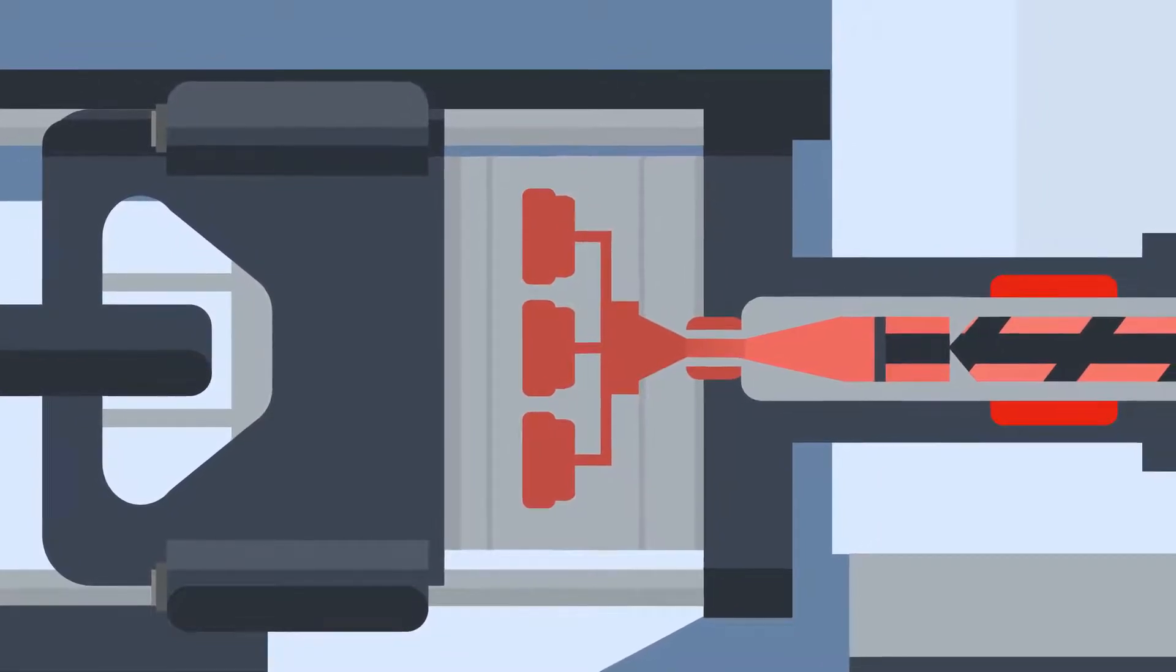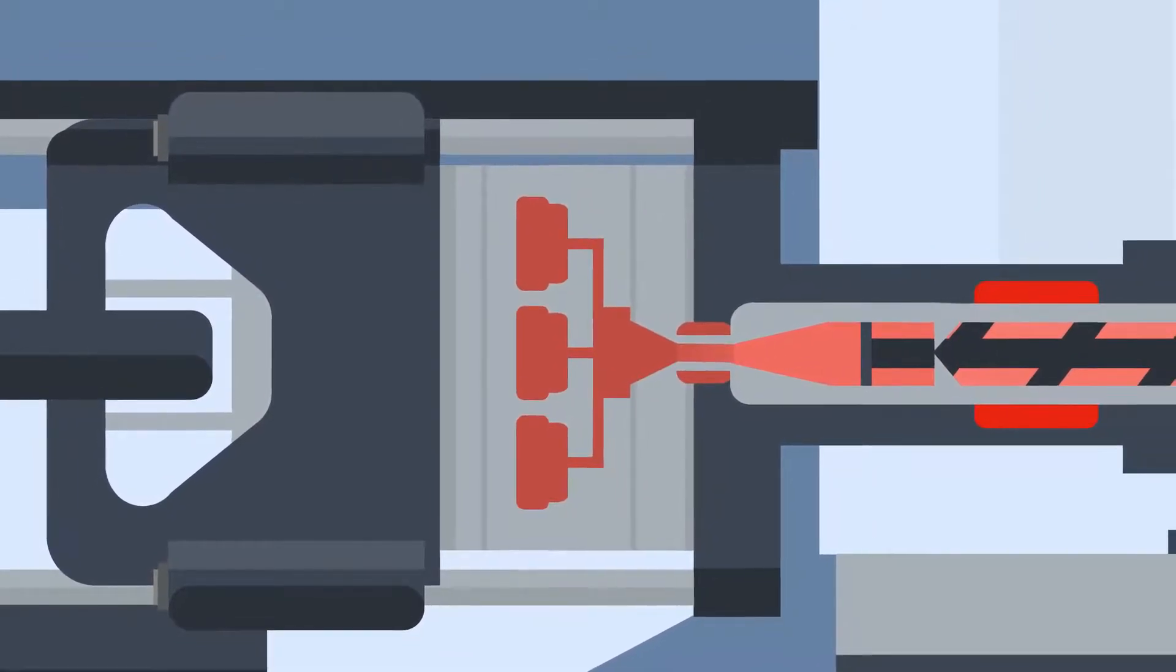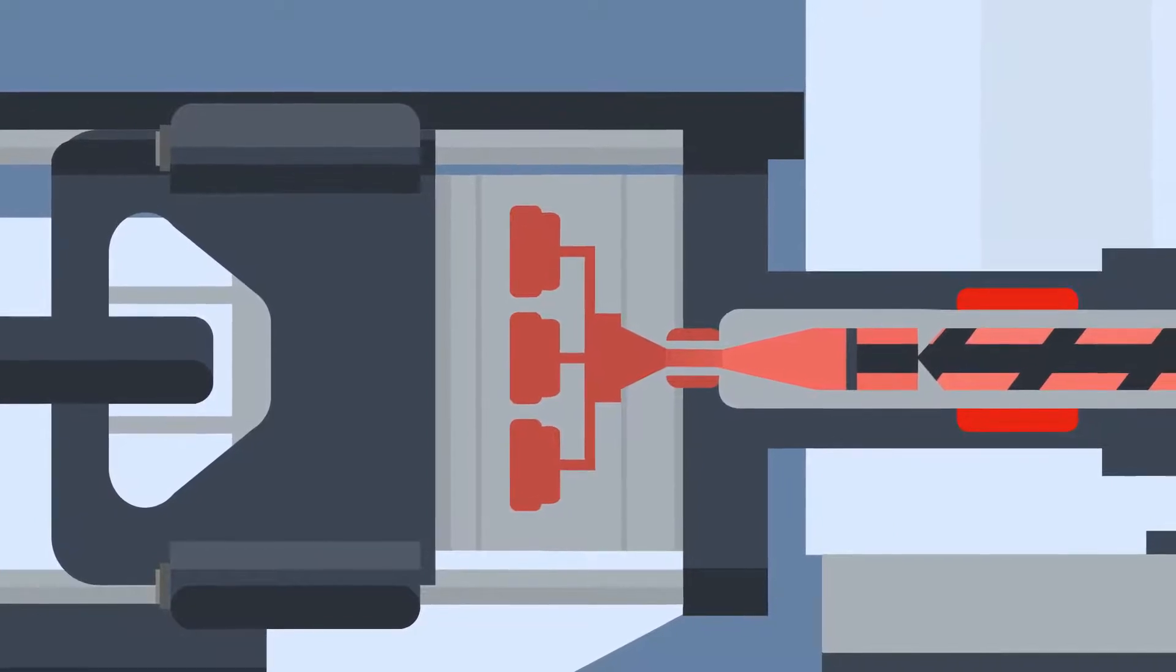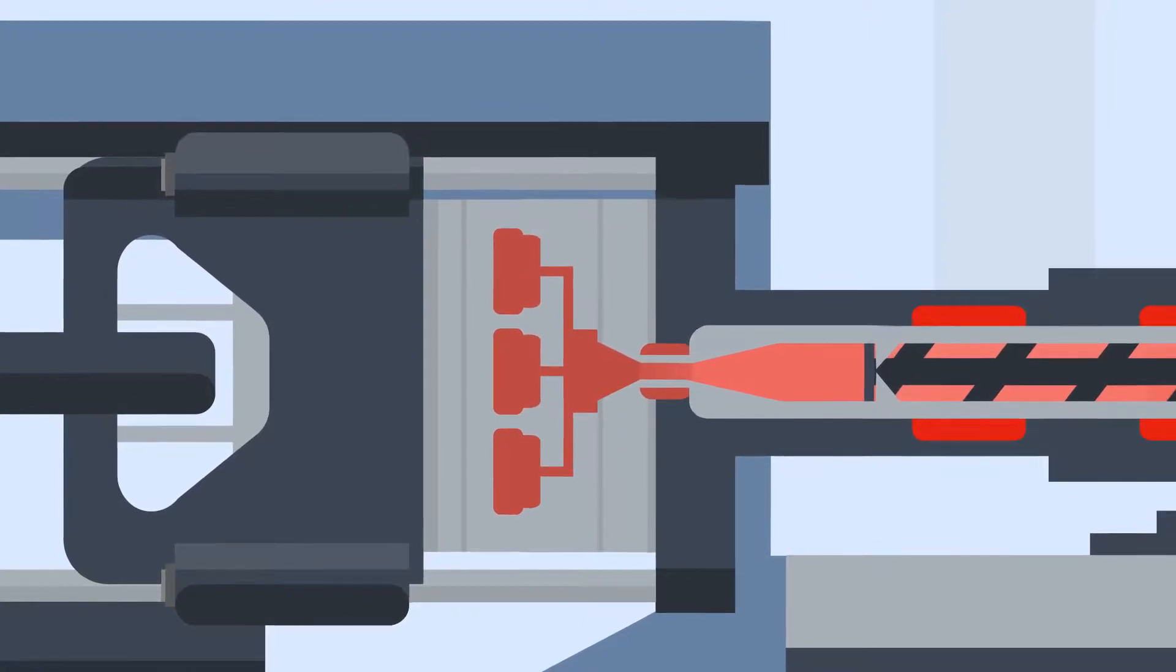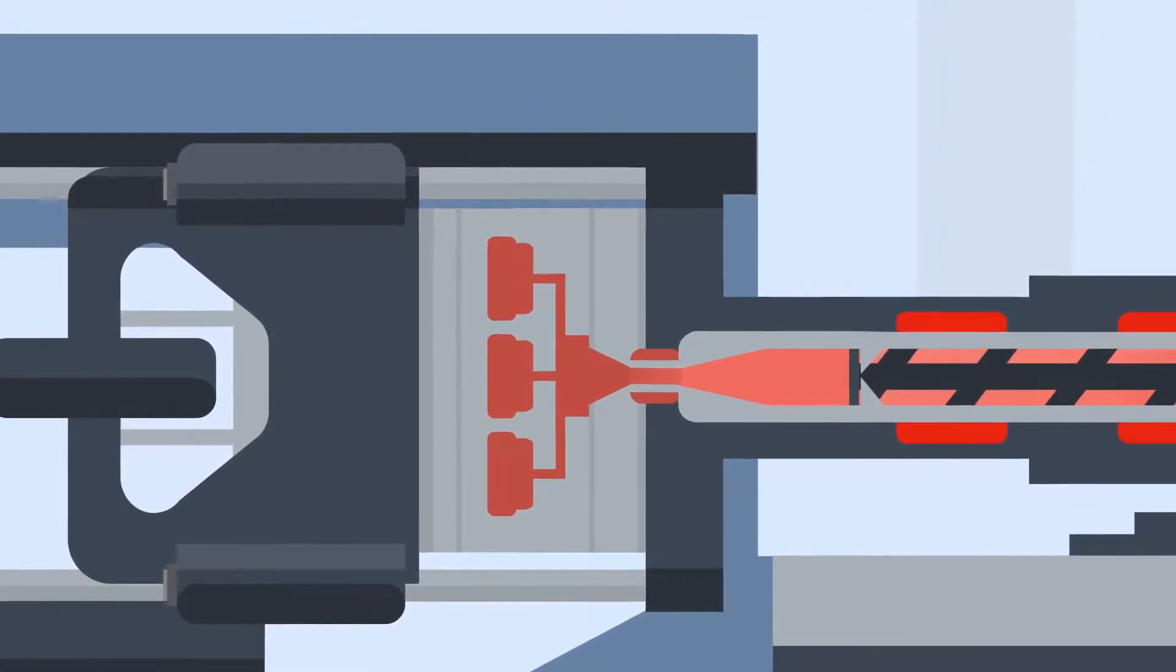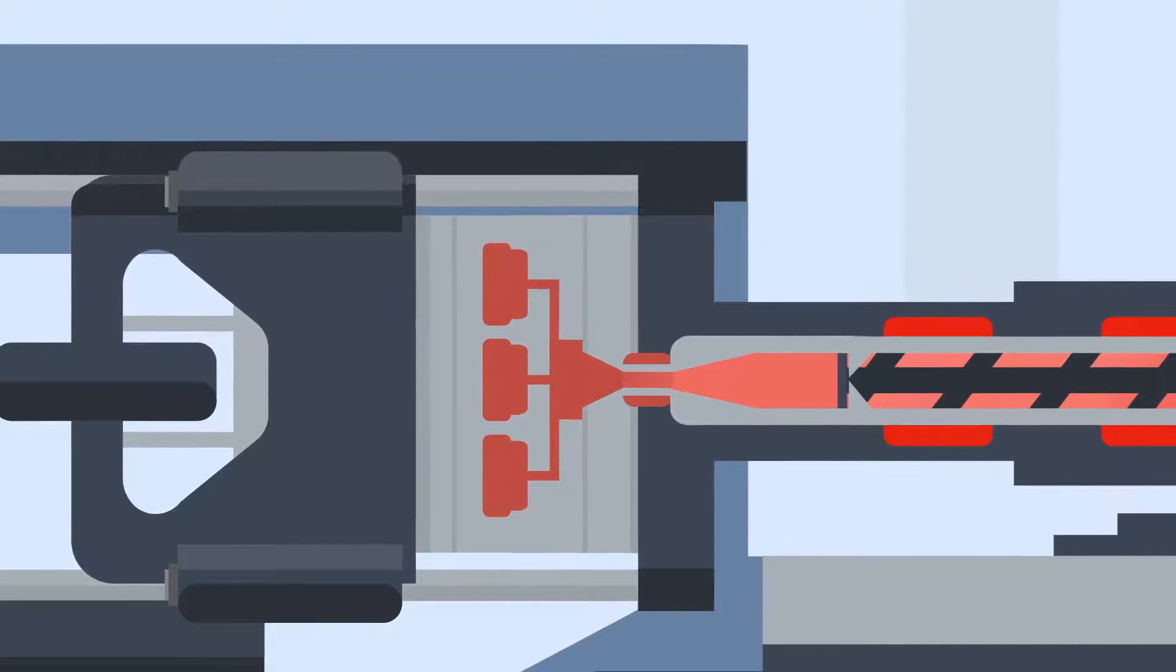When the tool cavity is mostly full of liquid, a holding phase begins, where the part starts to take its final form. After a set holding time, the screw will screw back to its set point. This happens at the same time as the cooling phase of the cycle.